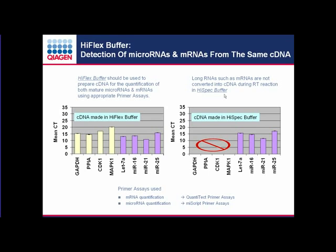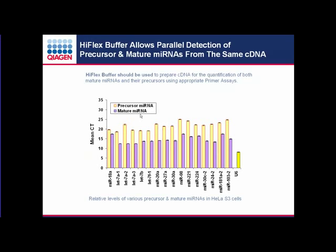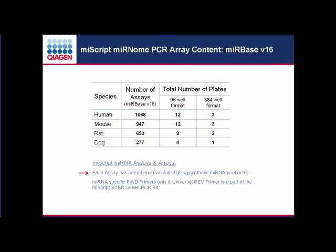In another example, cDNA prepared with high-flex buffer was used to quantify a panel of mature microRNAs and their precursors, with U6 included as a normalization control. A given mature microRNA may have multiple precursor stem loops — for example, LET7A1 has three different precursors — demonstrating how high-flex buffer cDNA can be used for simultaneous quantification of mature microRNAs and their precursor microRNAs.